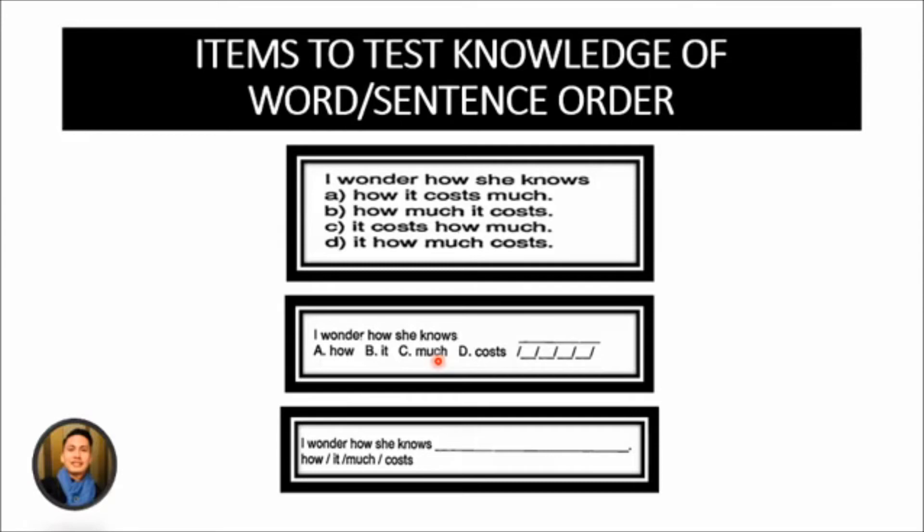This can also be done in a way that actually requires the writer to do some writing. For example here, example number three: I wonder how she knows and then blank and then the choices here below, and then you have to decide which of the four should be the first, the second, the third, and the last. Understanding of the appropriate sentence order can also be tested in a similar way by giving the testees several sentences and asking them to put them in order. This type of test tests knowledge of references, cohesive devices, and etcetera.